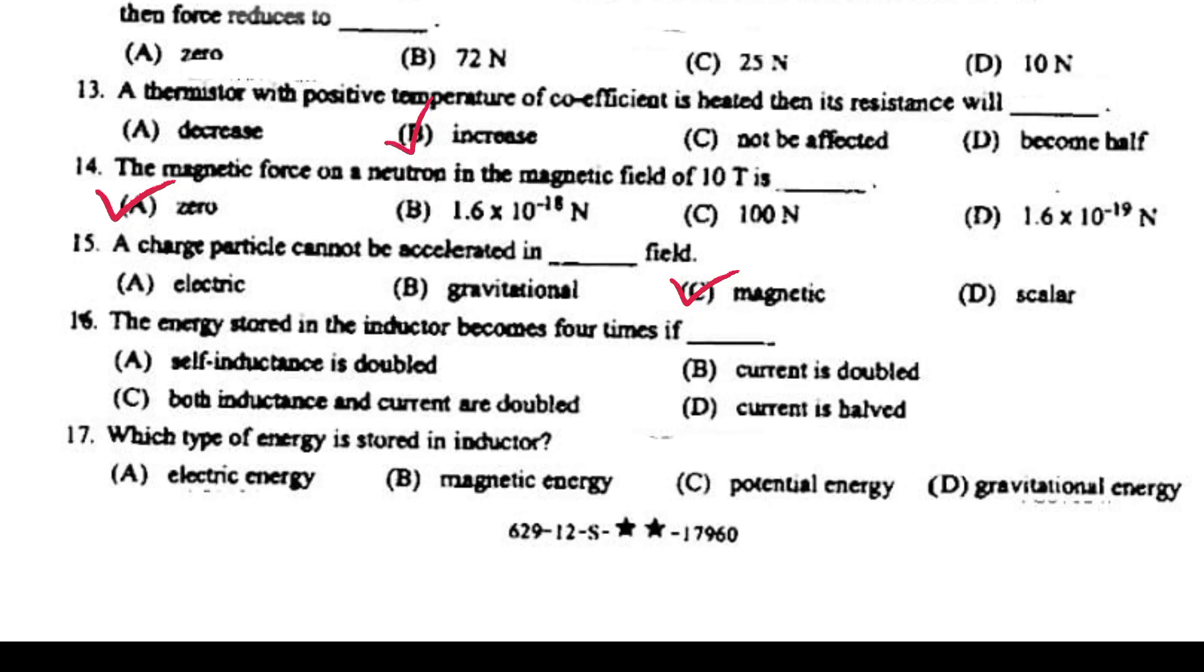The energy stored in the inductor becomes 4 times if current is doubled. Which type of energy is stored in inductor? Magnetic energy.